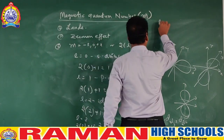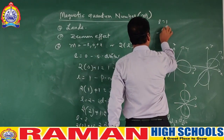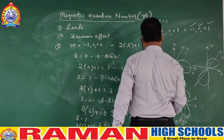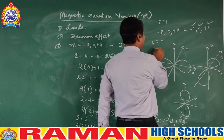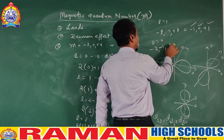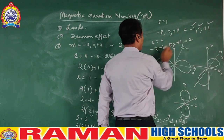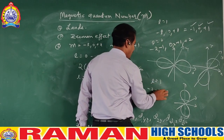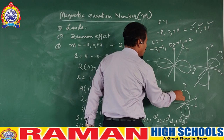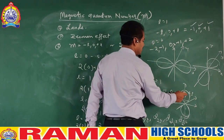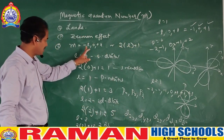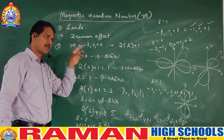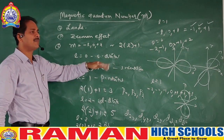We can also use the minus L, 0, plus L method. Suppose L is 1: values are −1, 0, +1 — that is 3 values. When L is 2: values are −2, −1, 0, +1, +2 — that is 5 values. When L is 3: values are −3, −2, −1, 0, +1, +2, +3 — that is 7 values. Either method gives us the number of orientations, which equals the number of orbitals in that sub-shell.